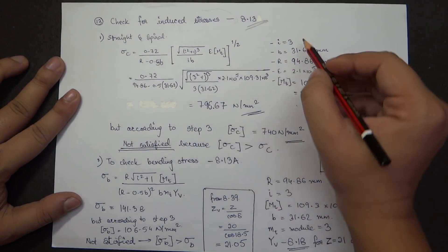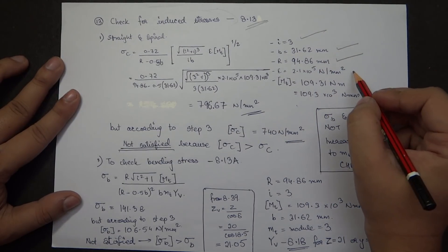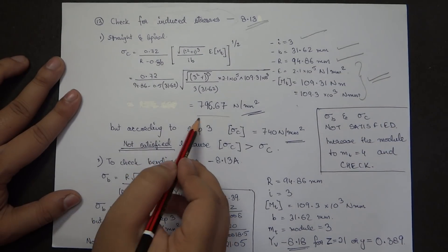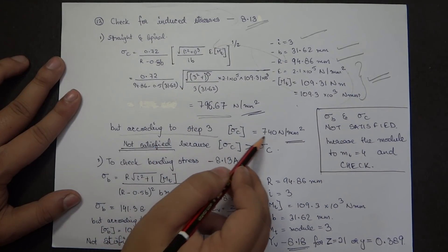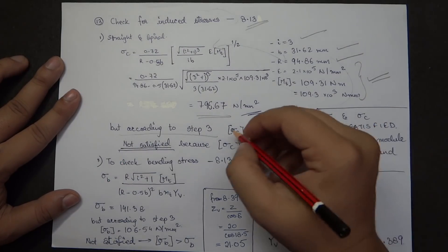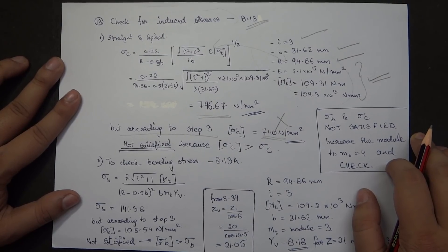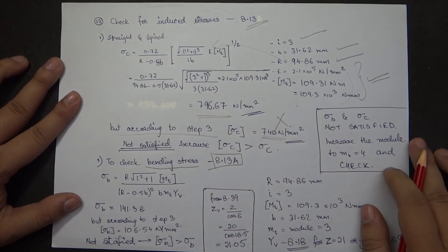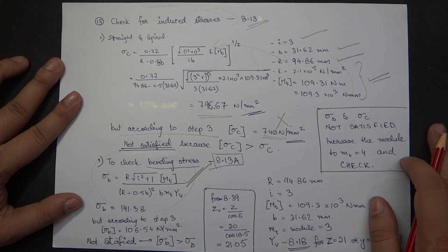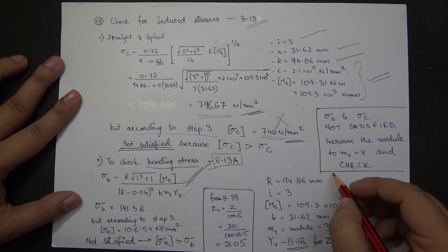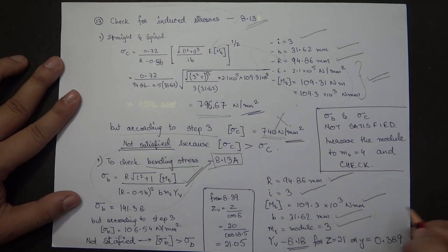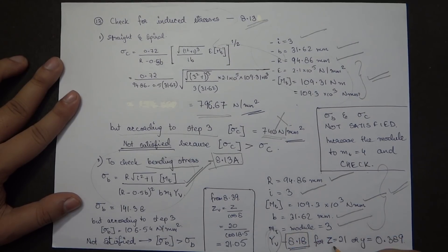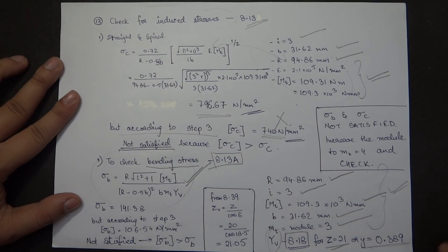For the final step, the induced compressive stress Sigma_C is calculated from page 8.13 using I = 3, B = 31.62 mm, R = 94.86 mm, E, and the revised design torque. The result is Sigma_C = 796.67 N/mm². However, the design compressive stress from step three was 740 N/mm², so this condition is not satisfied and the module must be increased.